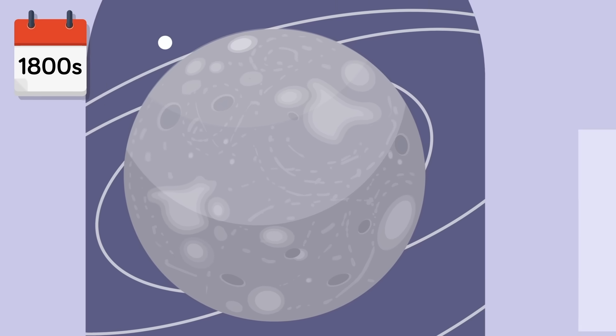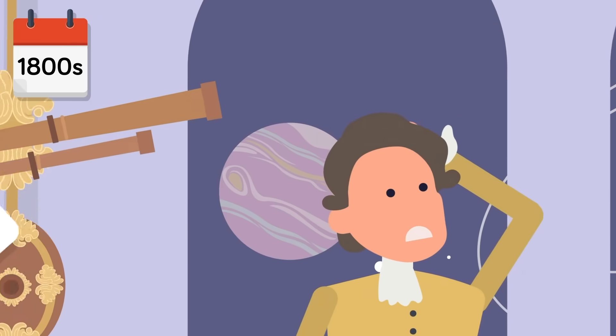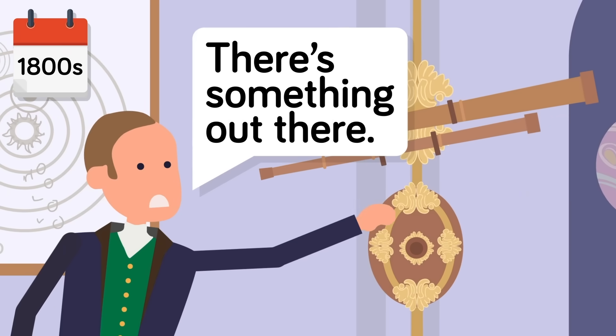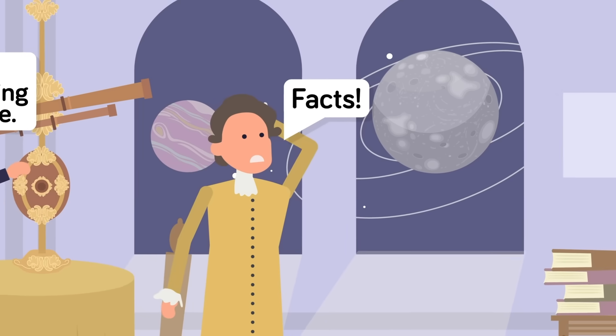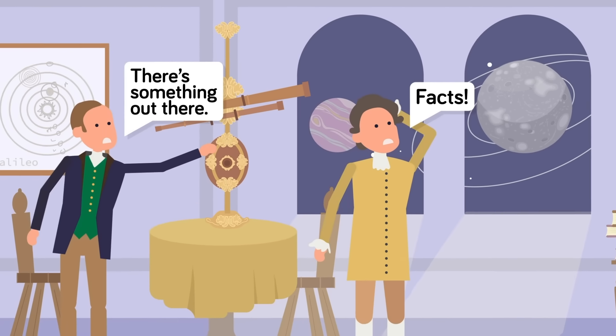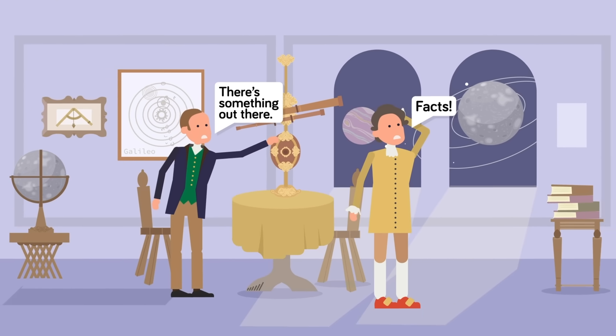In the mid-1800s, the evidence was adding up that something was present in the furthest reaches of our solar system. What the scientists of the time didn't know was that something had actually been directly observed multiple times after the invention of the telescope.